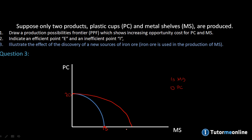Let's say with the new source of iron ore, if we use all resources and only produce metal shelves, we can now produce 25 instead of the previous amount. But if there was a discovery of a resource which increases the production of both plastic cups and metal shelves, then the entire PPF will shift out — let's say to 20 plastic cups and 25 metal shelves. We indicate with an arrow that it swivels out to show where our new PPF is.